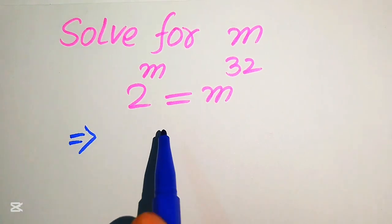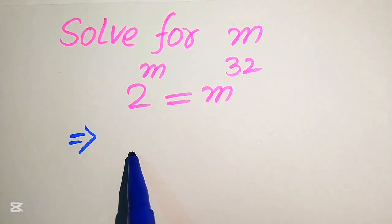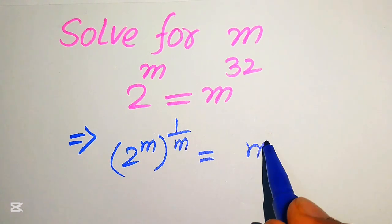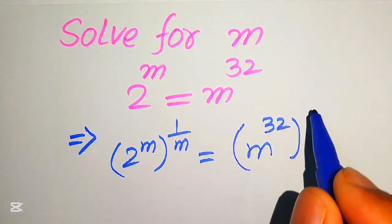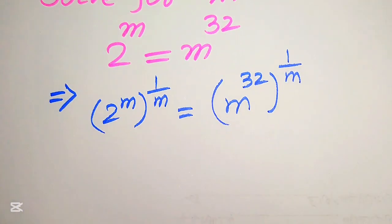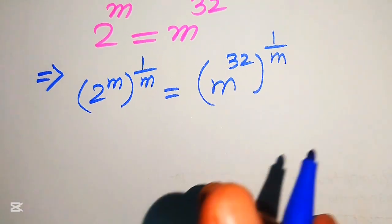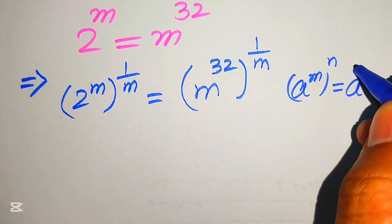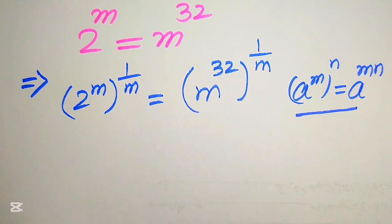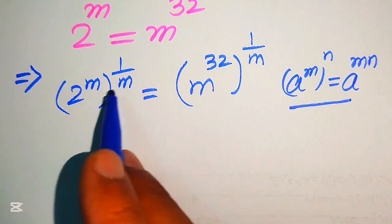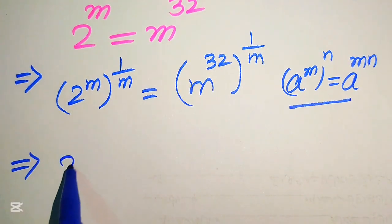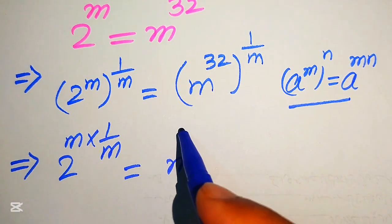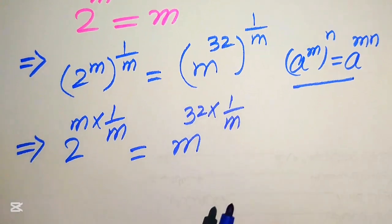In order to eliminate this m, we will take the mth root on both sides. It will be written as 2 to the power of m, and its whole power is 1 over m, equals to m to the power of 32 and its whole power is 1 over m. After this step we apply the exponent law: a to the power of m to the power of n equals a to the power of m multiplied by n. So we multiply these two exponents, written as 2 to the power of m multiplied by 1 over m, equals to m to the power of 32 multiplied by 1 over m.